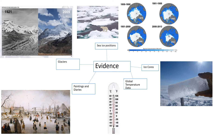Melting glaciers provide a clear picture record showing how ice has melted further up the mountains, clearly showing that the climate has got warmer over time. We can also look at sea ice positions — for example, we can see that the amount of ice around the North Pole in the Arctic has gradually been shrinking back over the last 30 to 40 years.